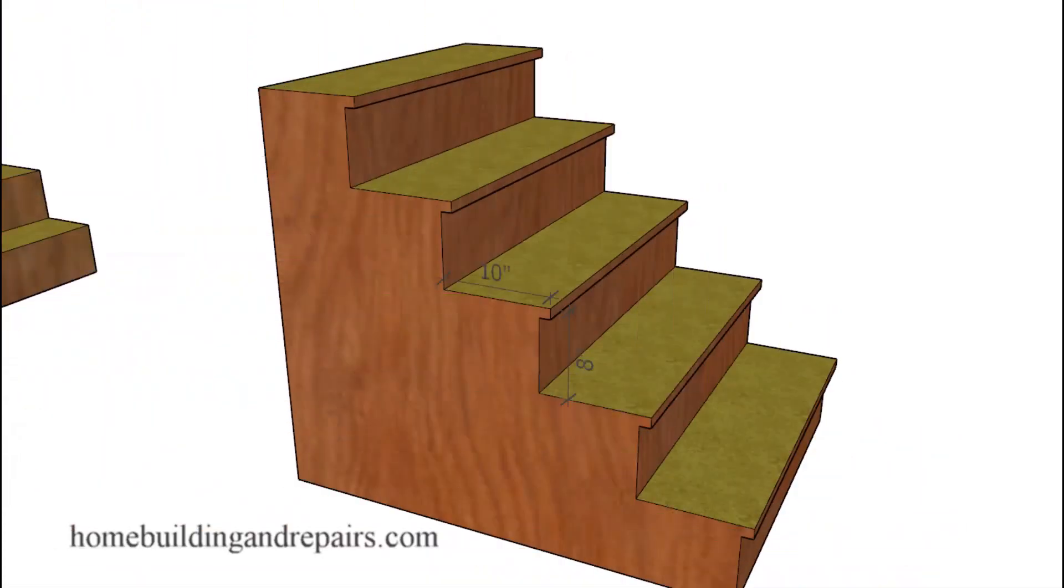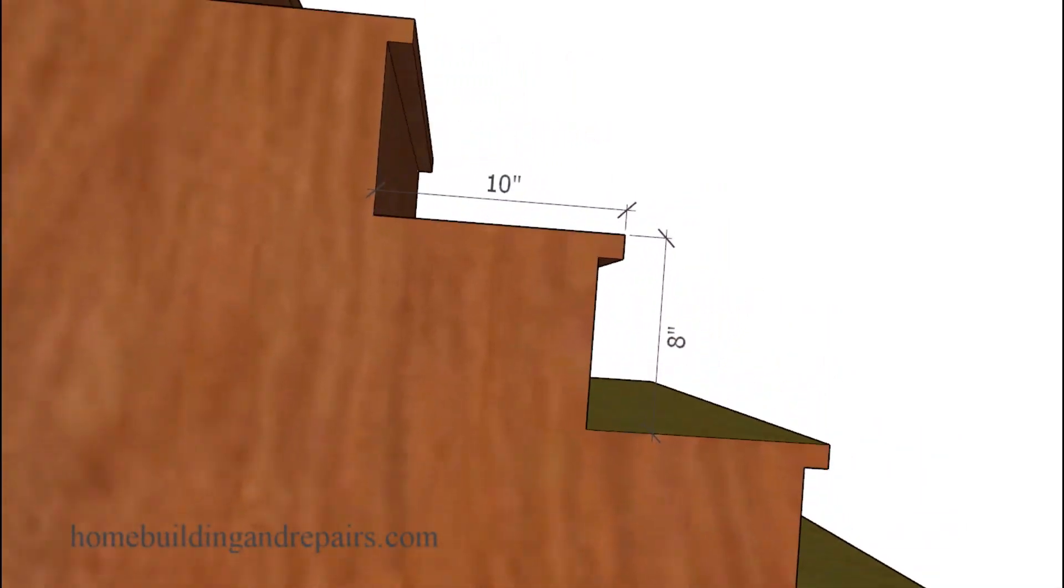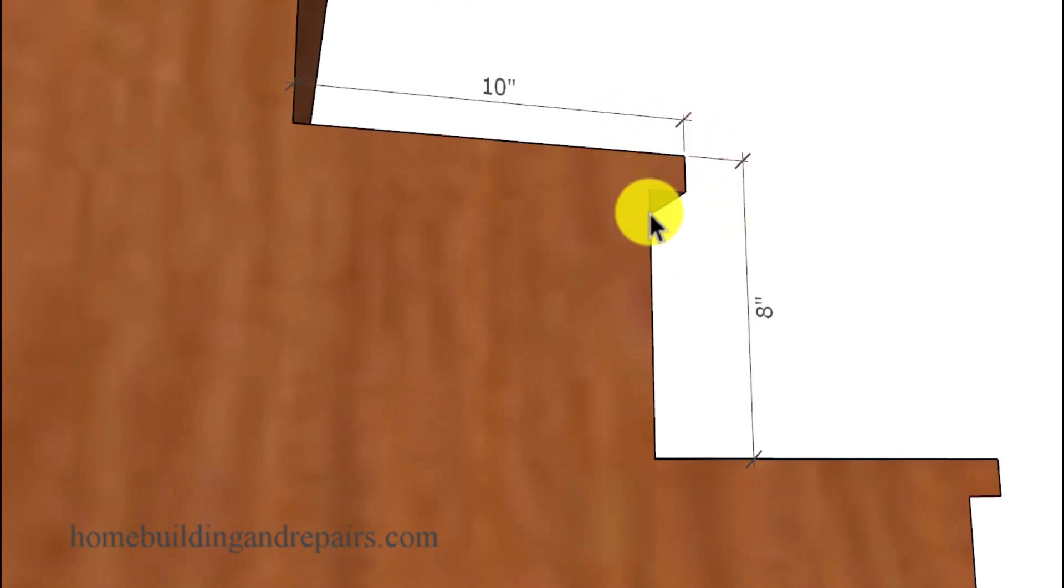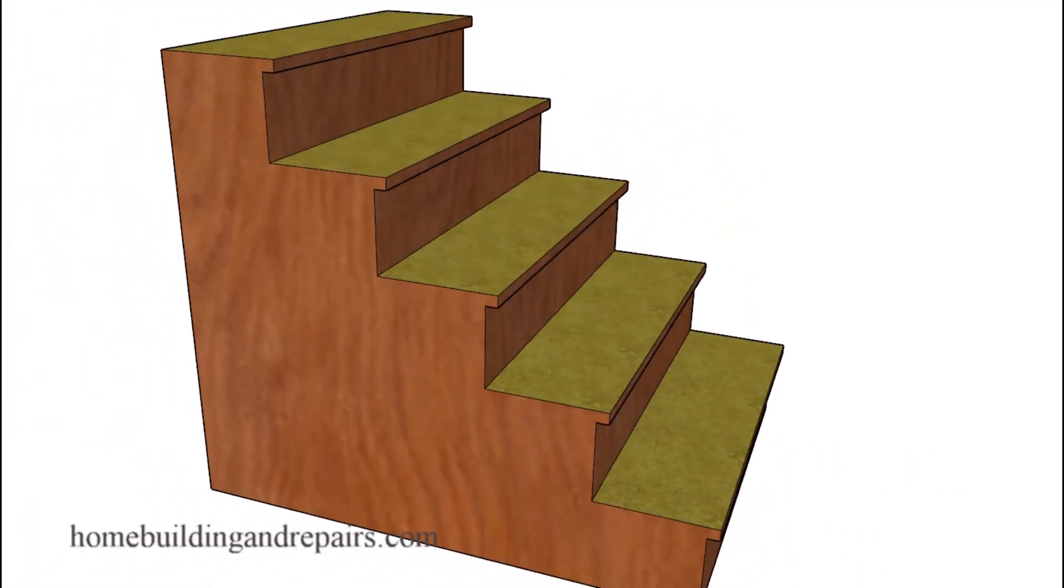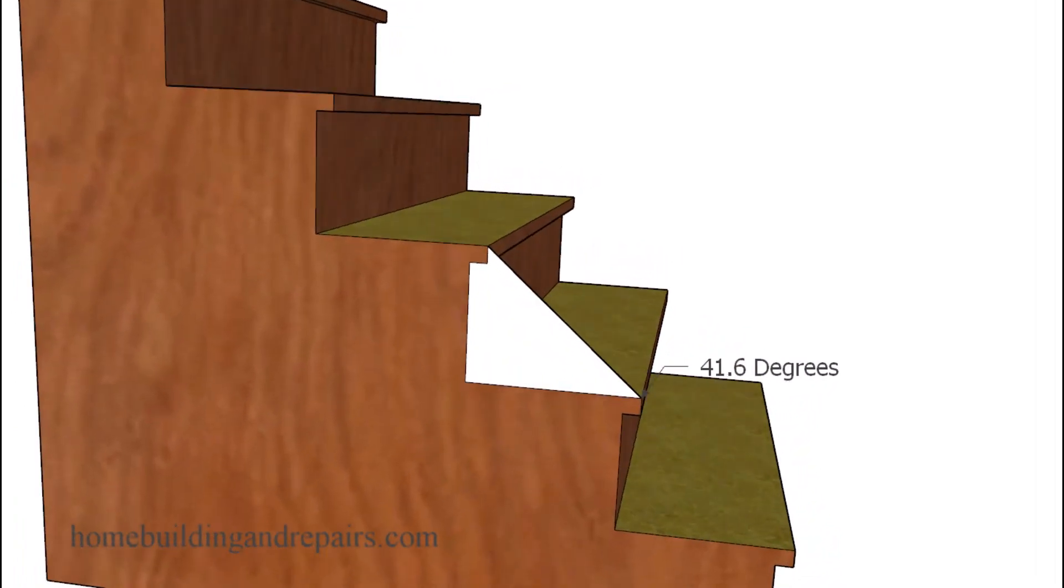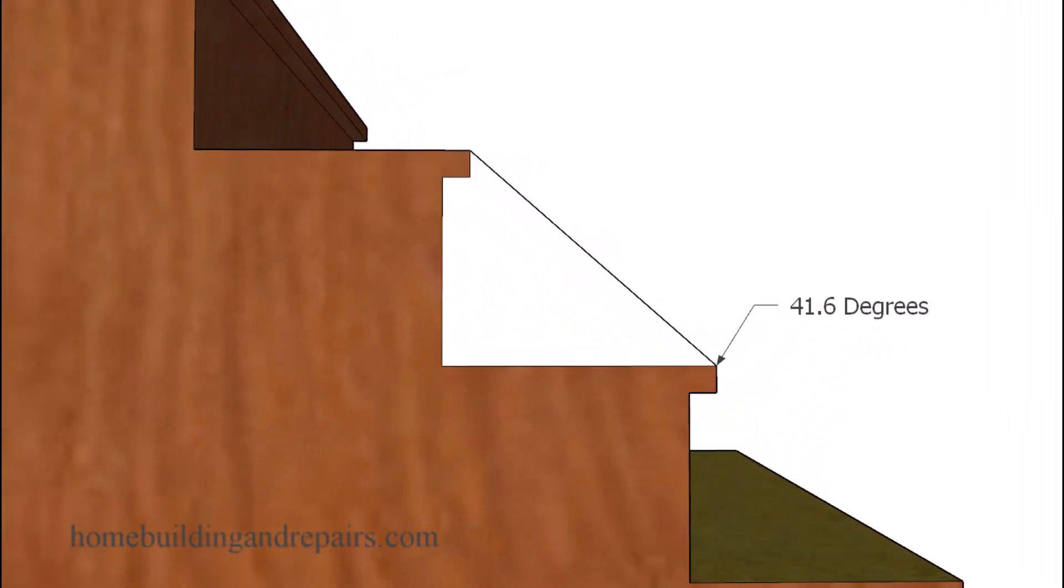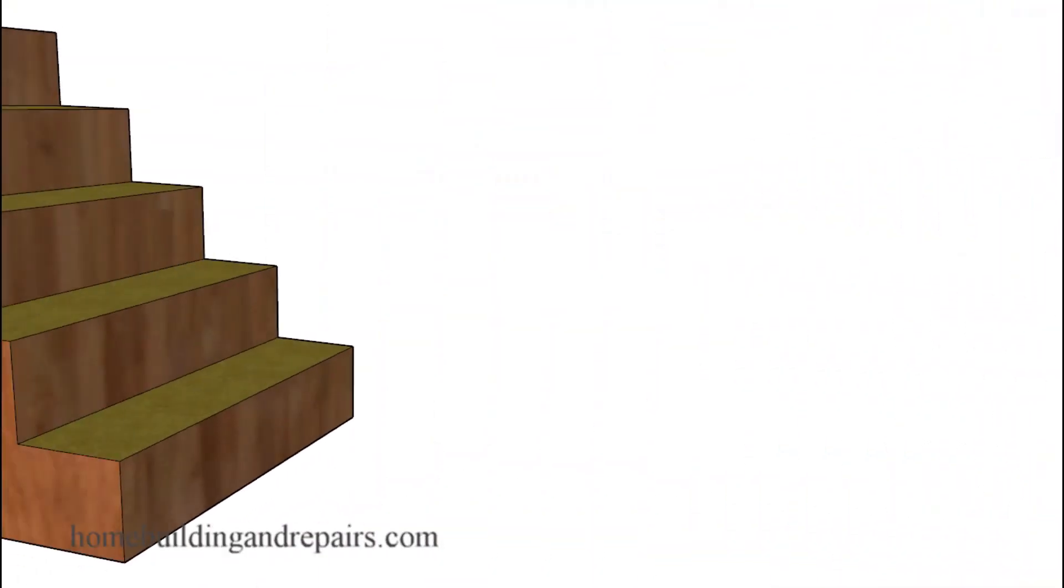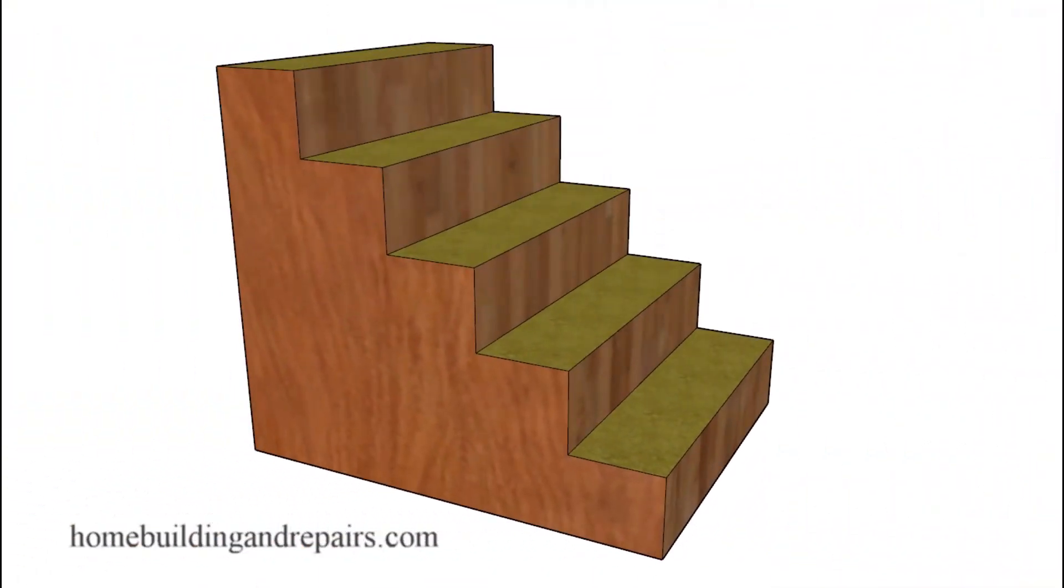And of course, to make that stairway a little safer, you can always add an inch nosing. I would highly recommend that if you could. And of course, this angle here will be exactly the same as the other angle because by adding the nosing, we don't change the angle of the stairway.